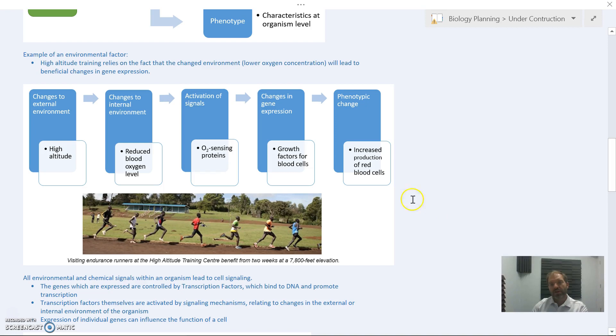A really good example of environmental influence is around the number of blood cells you have. This is why high altitude training works. If you wanted to increase the amount of oxygen that your blood can carry, one way is through high altitude training. When you have changes in the external environment from high altitude of reduced oxygen in the air, that leads to reduced blood oxygen level in your body. Oxygen sensing proteins will pick that up and lead to signaling of growth factors that increase the number of red blood cells in circulation.